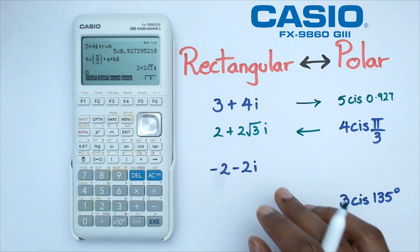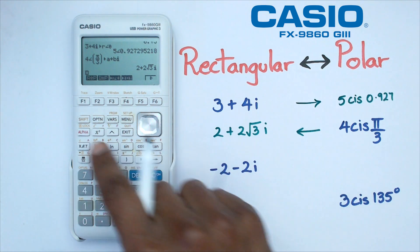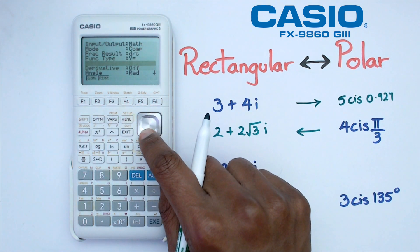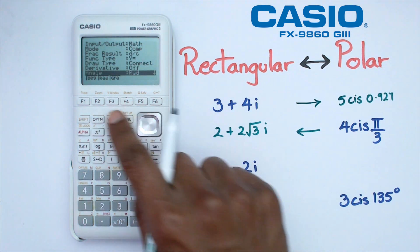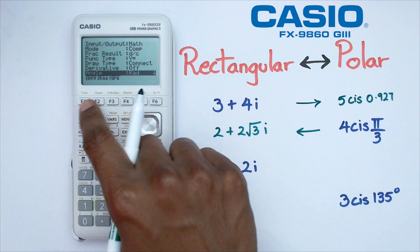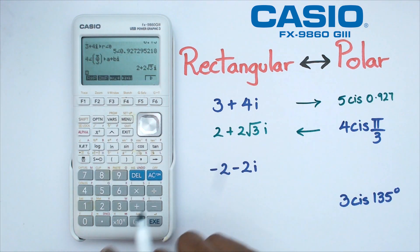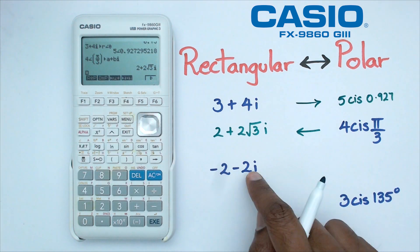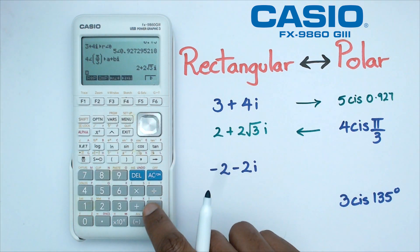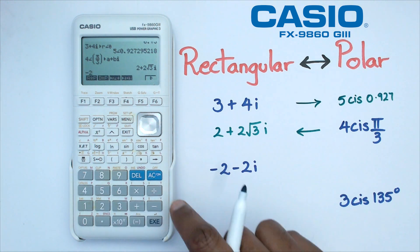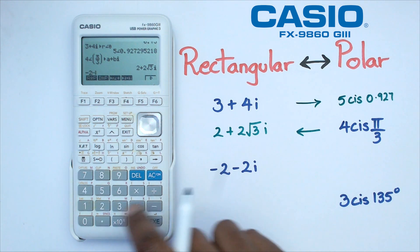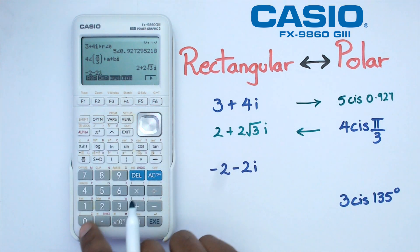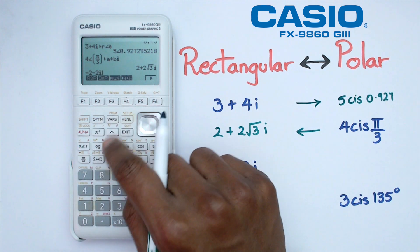Now we're going to try the same examples but in degrees. To do this we need to click on shift setup and we're going to go down to angle and change it to degrees. So now we've got negative 2 minus 2i, so we're going to put that in the calculator — negative 2 minus 2i — where shift 0 is the i button.